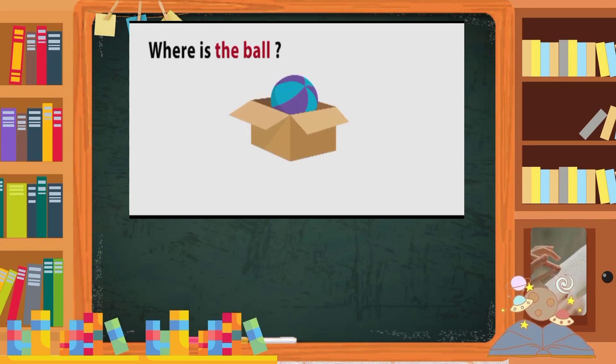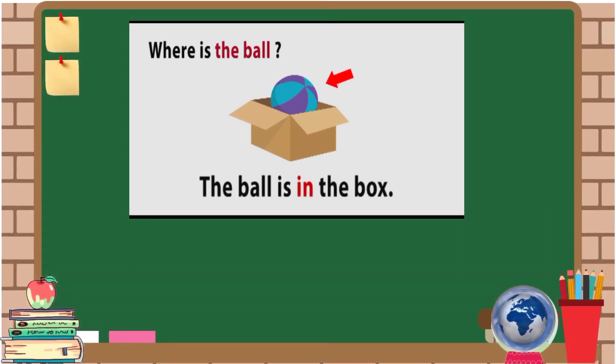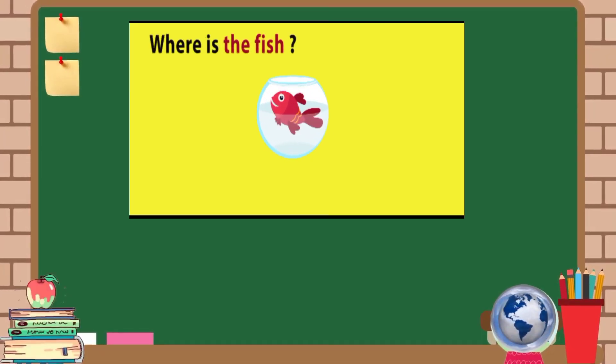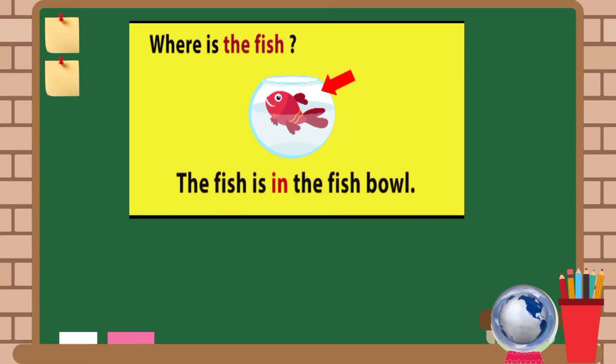Where is the ball? The ball is in the box. Where is the fish? The fish is in the fish bowl.